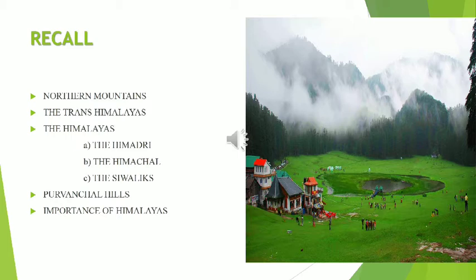Then the Himalayas — the main divisions are Himadri, Himachal, and Shivaliks. In the Himalayas you can find many glaciers. Name some glaciers: Gangotri, Yamunotri, Siachen. Which is the world's highest peak? Mount Everest. The height of Mount Everest is 8,848 meters.